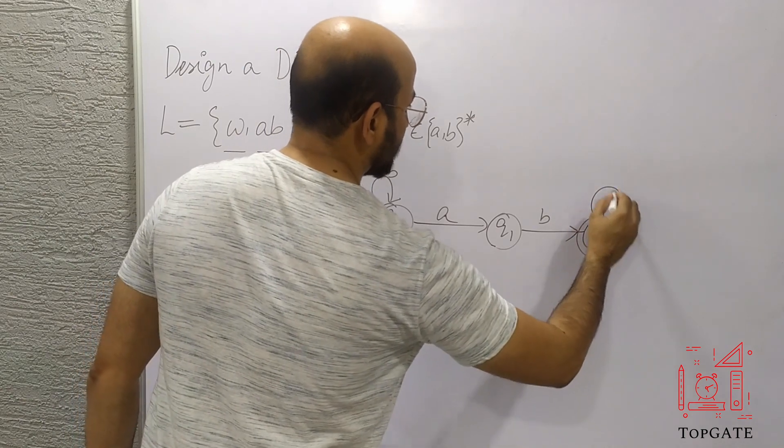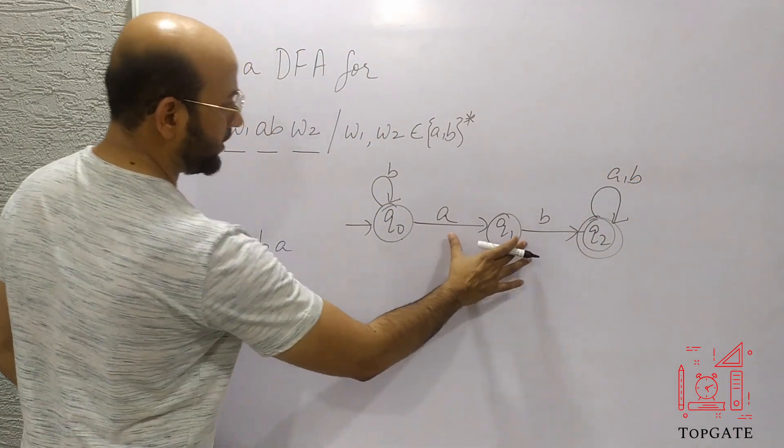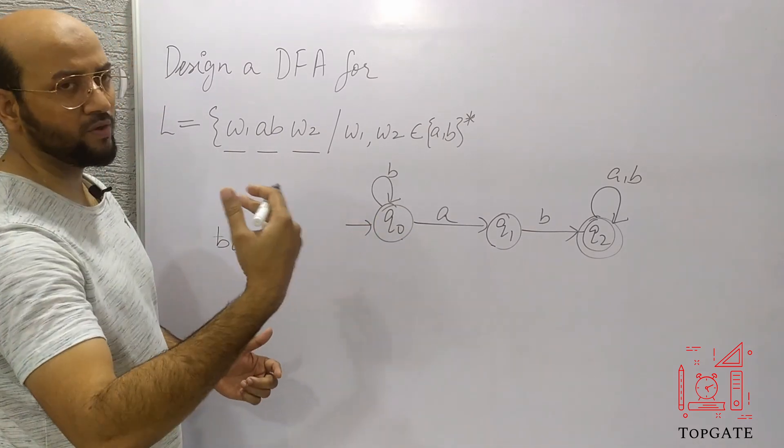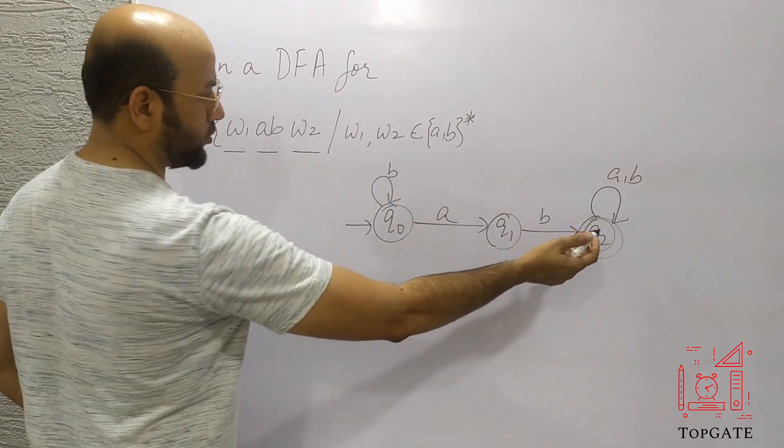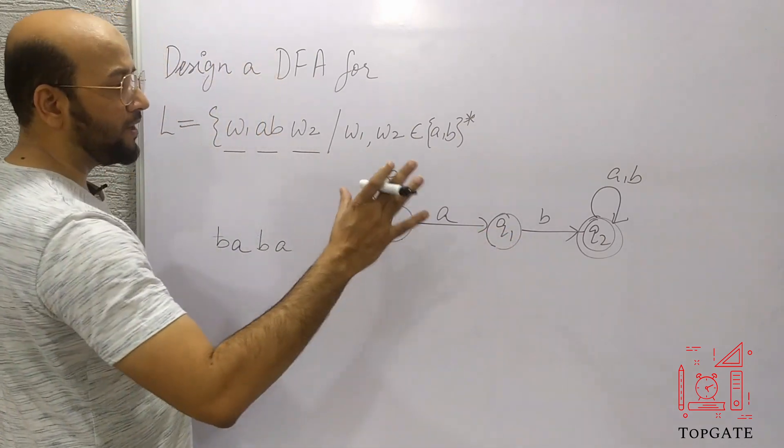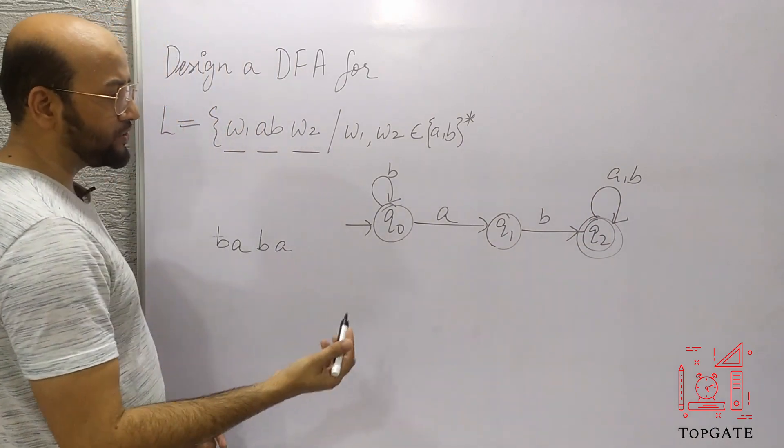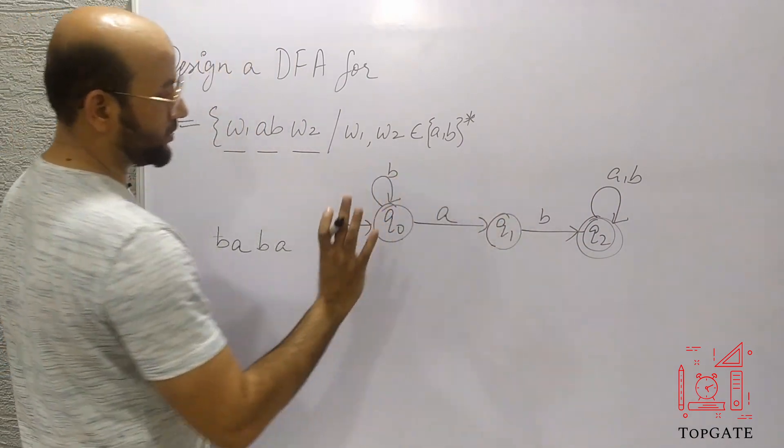So at Q2, I can add a self loop of A, B because what I need? I need AB in between and after this AB, I can have any combination of AB including null also. So I can terminate my string with AB also. I can terminate my string with any combination of AB also. The thing is that we are getting AB in the string.